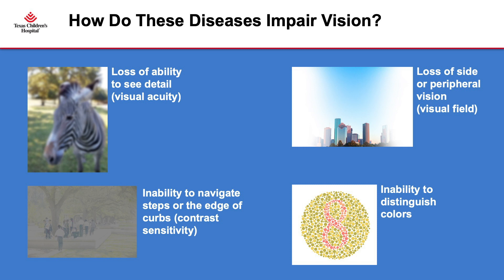Contrast sensitivity is also affected. The number one thing parents and therapists report is difficulty navigating steps. Depending on the type of eye disease, there may also be impairment in color vision.